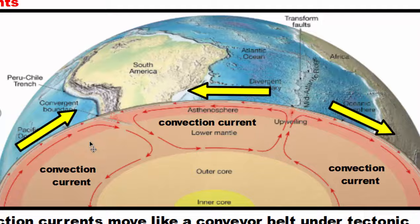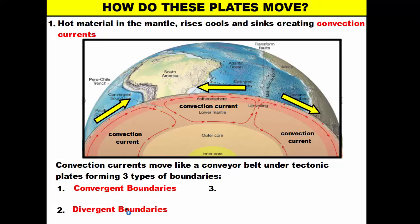As a result, we create boundaries. There are three types of boundaries that form because of convection: convergent boundaries, divergent boundaries, and transform boundaries. Before we move on to what those three boundaries do, let's take a quick look at an animation about how convection actually happens in the mantle.